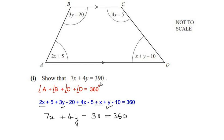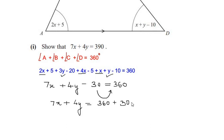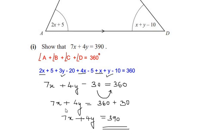Looking at this equation, the constant term is on the left side, so let us bring the negative 30 to the other side. We get 7x plus 4y is equal to 360, and negative 30 turns to positive 30, giving us 7x plus 4y is equal to 390. This is the equation we were asked to show in Part 1. Now let us look at the second part of the question.